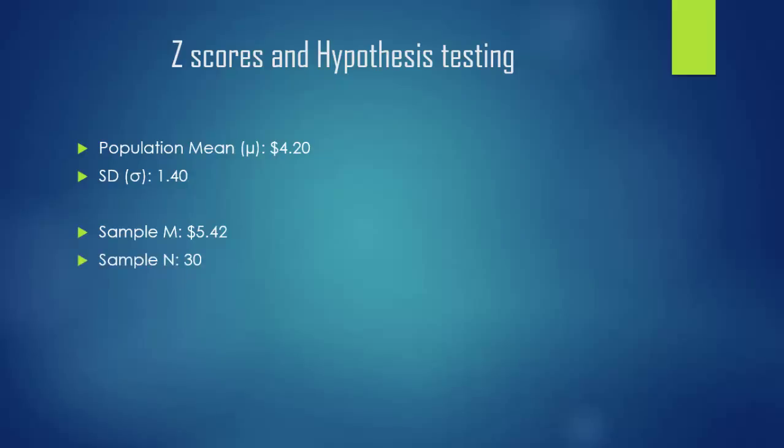The sample size n is 30. Lastly we need to calculate the standard error. The standard error is going to be the standard deviation for the population divided by the square root of the sample n. For this example it's going to be 1.4 divided by the square root of 30, which is going to be 0.26. Hang on to these numbers, we're going to need them later.